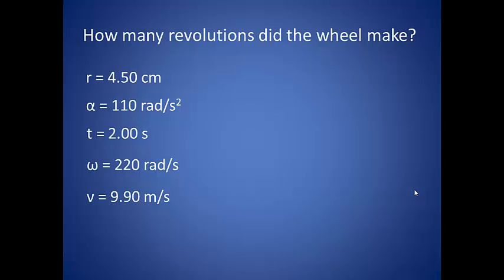So then how many revolutions would our wheel make in this amount of time? Essentially what we are looking at here is how much distance is covered by the wheel in this amount of time. Remember this linear kinematics equation? We can translate this into rotational motion by substituting in the corresponding variables.